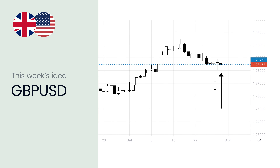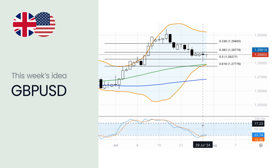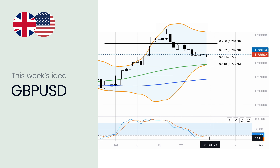Before we proceed, let's check on the performance of last week's idea. The idea was for a buy on natural gas with a possible target around 2.50. The price has corrected to the downside, invalidating the idea for now, but it could rebound in the coming days and reach the target of 2.50.